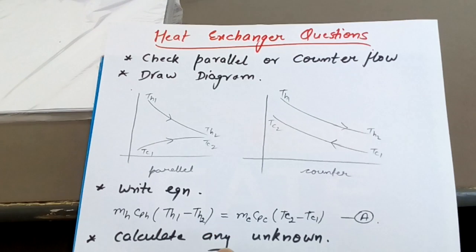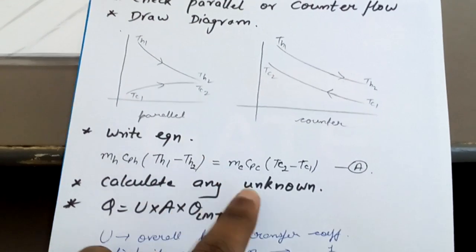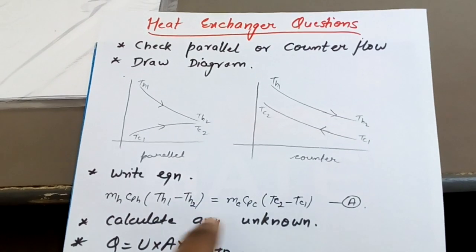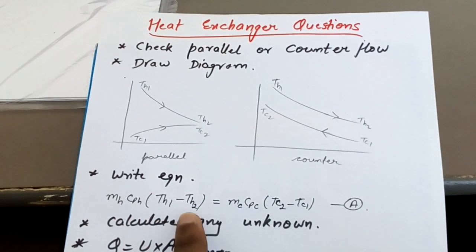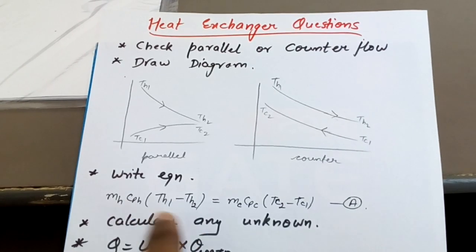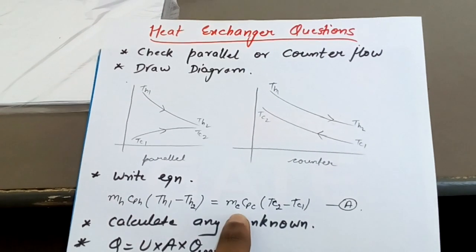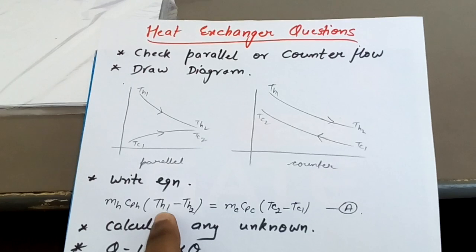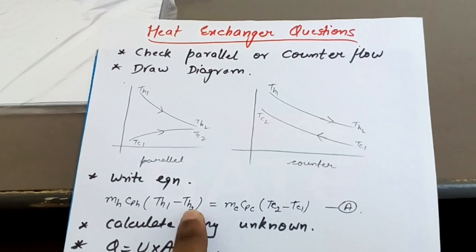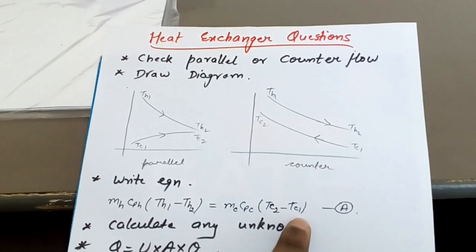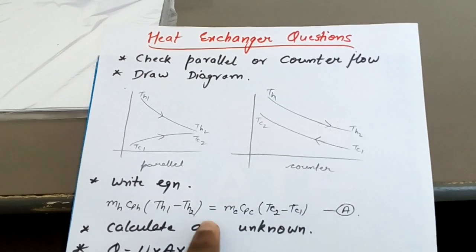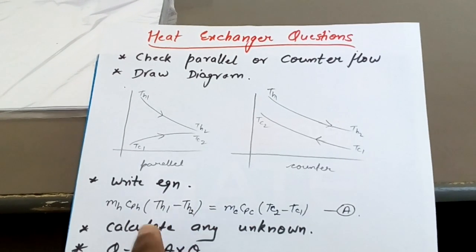In the question, one thing will be missing — it could be the mass flow rate of the hot fluid, the mass flow rate of the cold fluid, TH1, TH2, TC1, or TC2. Only one thing will not be given; you have to find that using this equation. The rest will be given.